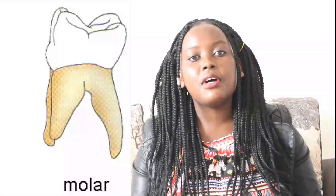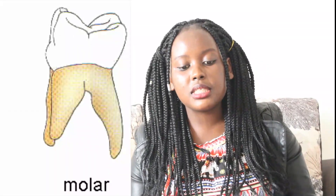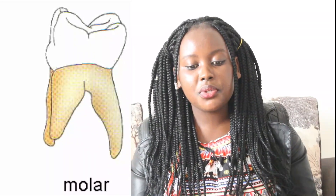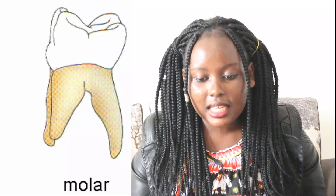Lastly, we have the molars. Molars have three roots, broader surfaces, and four to five cusps. They are used for grinding food.